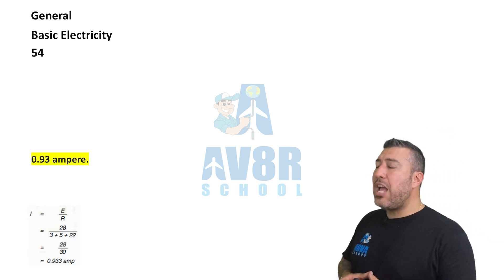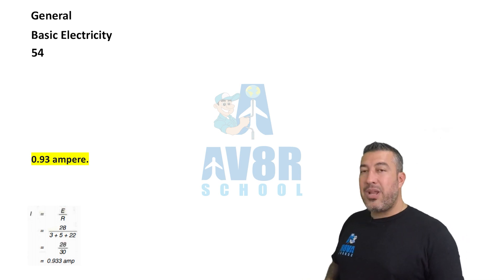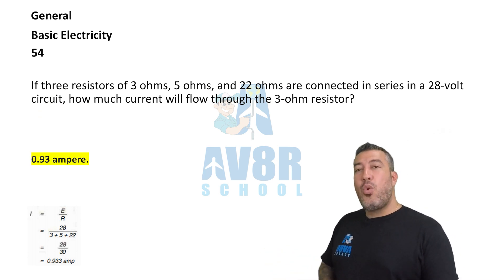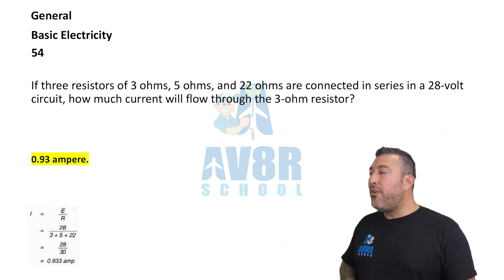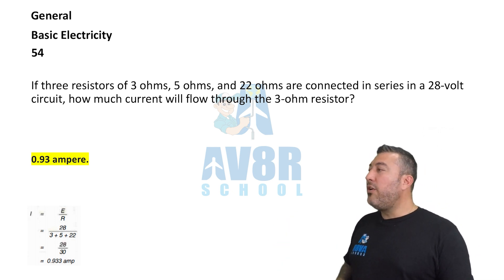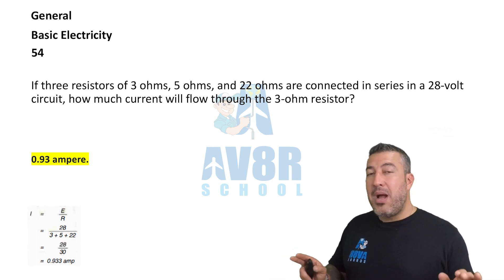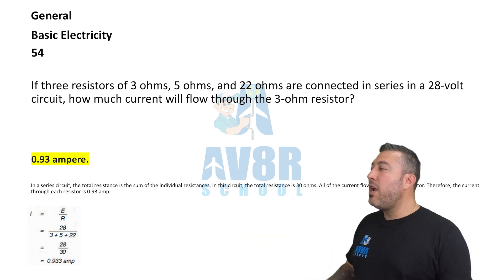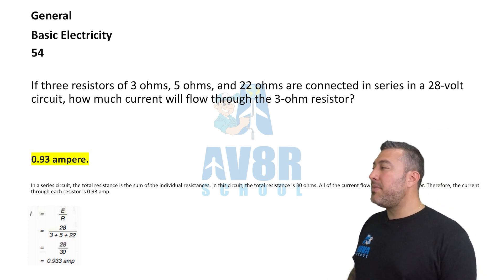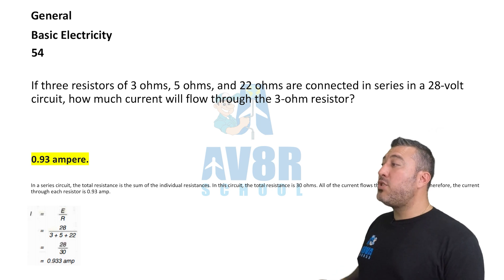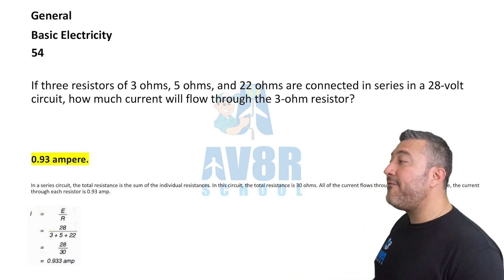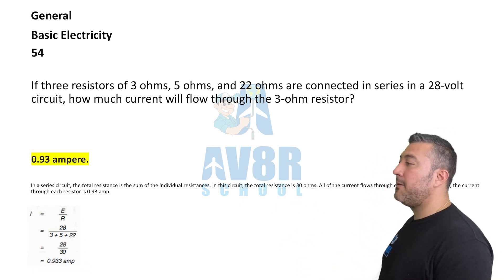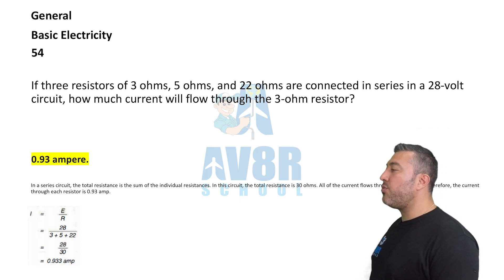Question 54. If three resistors of 3 ohms, 5 ohms, and 22 ohms are connected in series in a 28 volt circuit, how much current will flow through the 3 ohm resistor? You're going to get 0.93 amps.